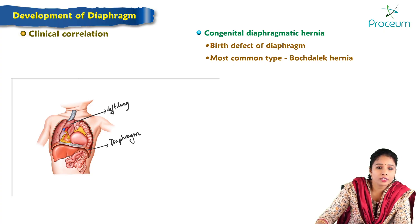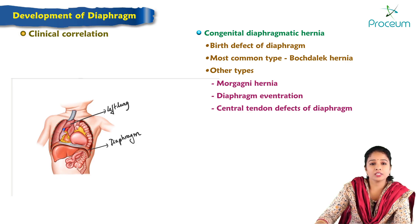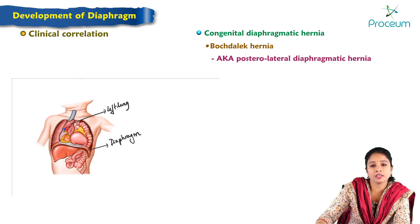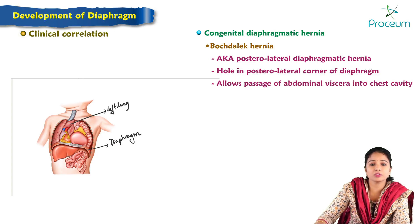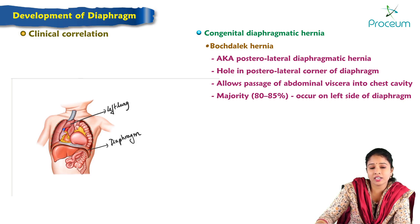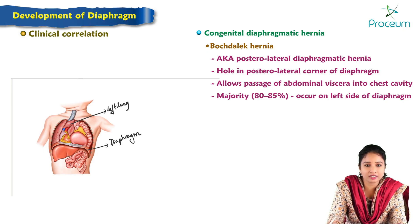The most common types of congenital diaphragmatic hernias are Bochdalek hernia, Morgagni hernia, diaphragmatic eventration, and central tendon defects. Bochdalek hernia, also known as posterolateral diaphragmatic hernia, is characterized by a hole in the posterolateral corner of the diaphragm, allowing passage of abdominal viscera into the chest cavity. The majority of Bochdalek hernias — 80 to 85 percent — occur on the left side of the diaphragm.